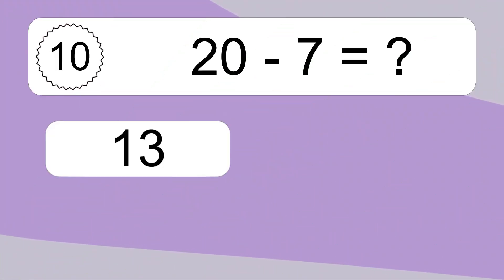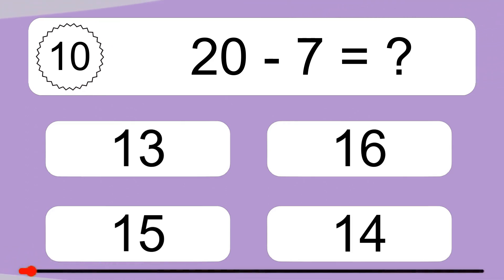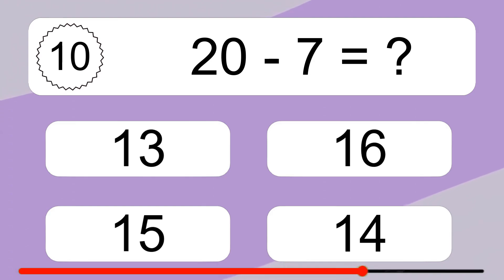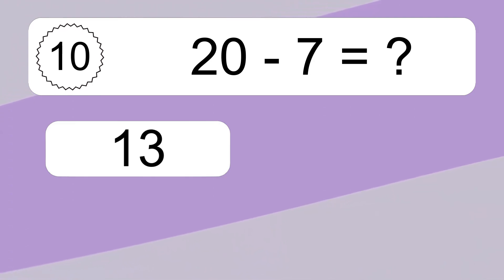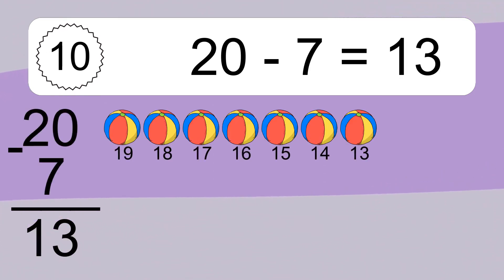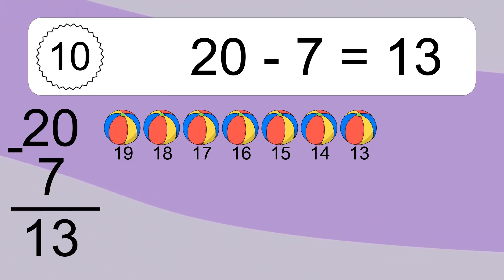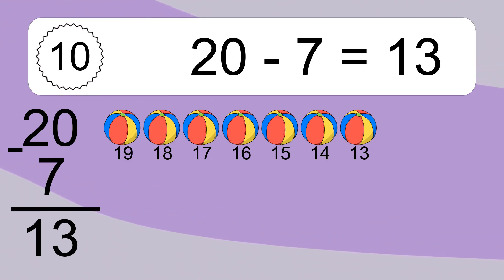20 minus 7 equals what? 20 minus 7 equals 13. Let's count it. 19, 18, 17, 16, 15, 14, 13.